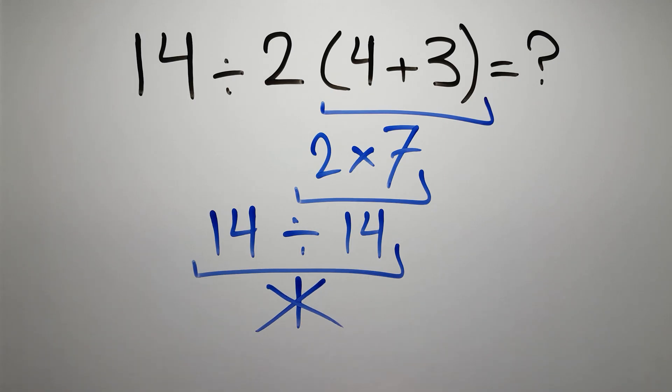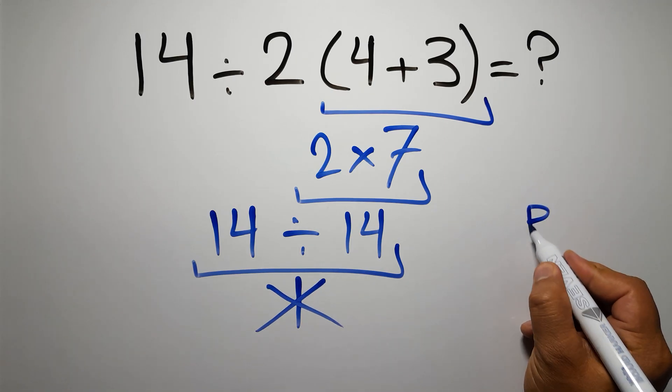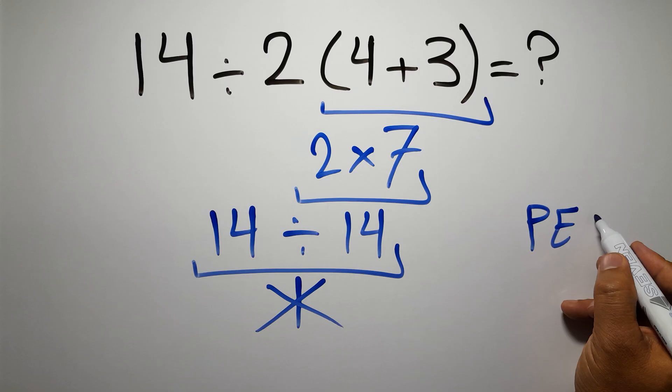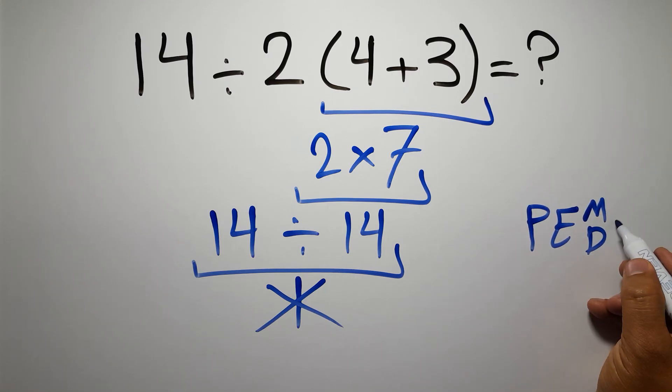Because according to the order of operations, first we have to do parentheses, then exponents, then multiplication or division, and finally addition or subtraction.